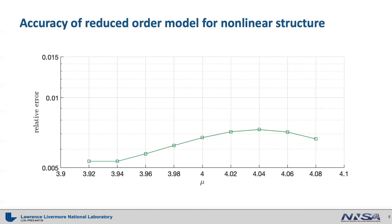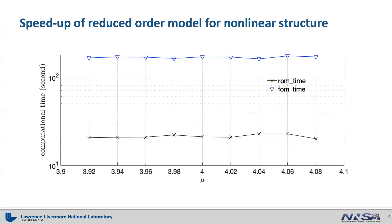Here is a graph showing the accuracy of the hyper-reduced order model. As you can see, all the relative errors are well below 1%. Here is a graph showing the speedup achieved by the hyper-reduced order model for the nonlinear structural problem. The full order model takes on average around 170 seconds, while the reduced order model takes around 20 seconds, implying a speedup of 8.